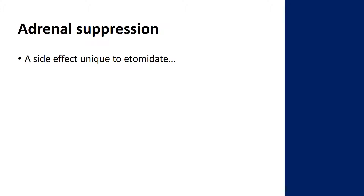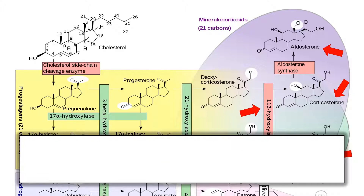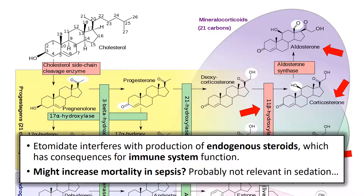The last complication is adrenal suppression, a side effect very unique to etomidate. Etomidate hits the 11-beta-hydroxylase enzyme, which helps produce aldosterone, corticosterone, and cortisol. This adrenal suppression is important because etomidate interferes with the production of endogenous steroids, which has consequences for immune system function. This probably doesn't matter much in sedation for the vast majority of cases, but there has been some suggestion that etomidate might increase mortality in sepsis, and this effect occurs even with the first dose. So we tend to avoid etomidate if the patient is really sick.